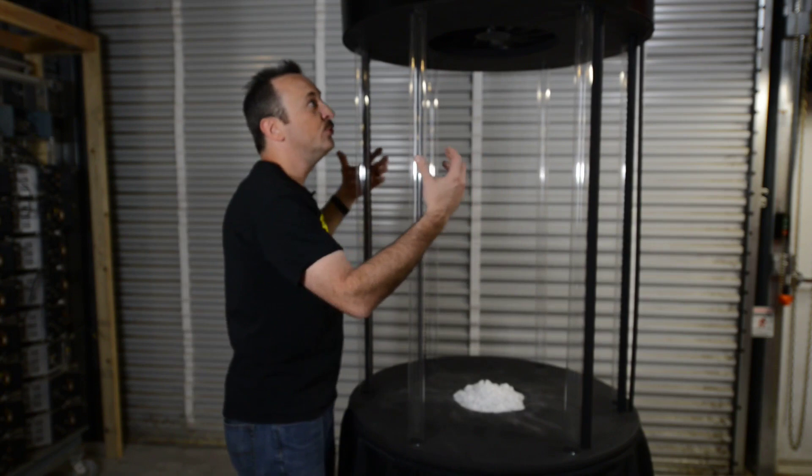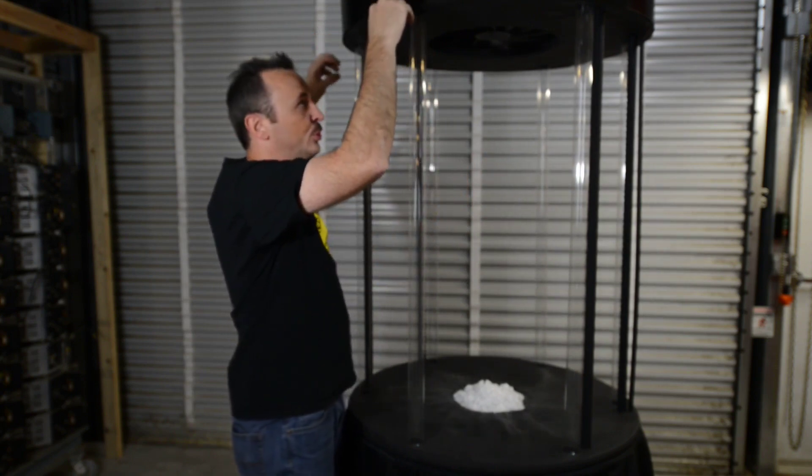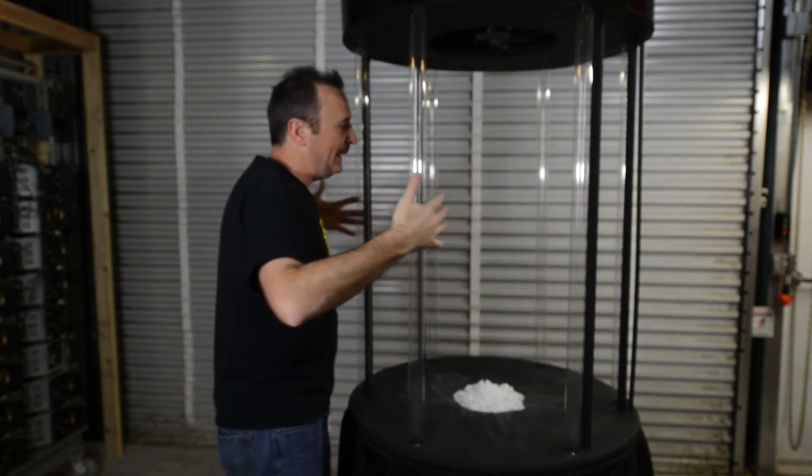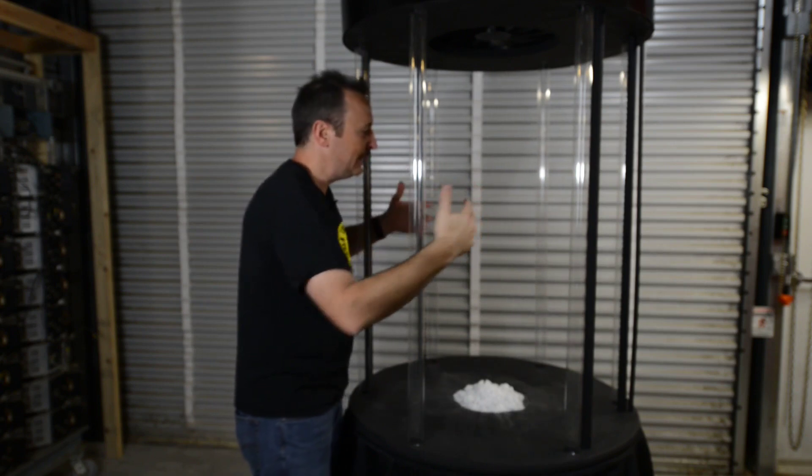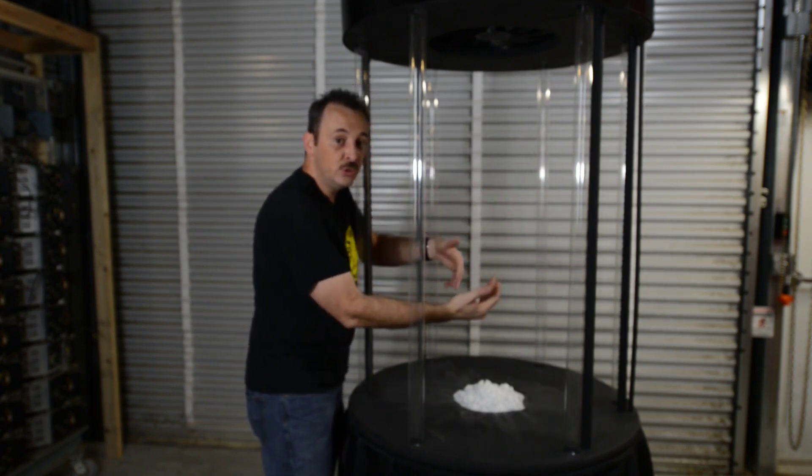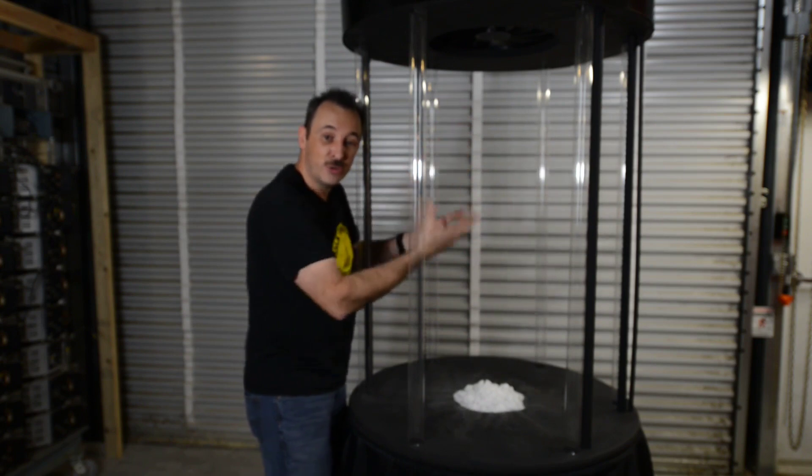The six tubes around the outer edges are powered by computer fans which push air downward through them and then out these holes along the sides. That creates a lateral motion that combines with our updraft to create our vortex.